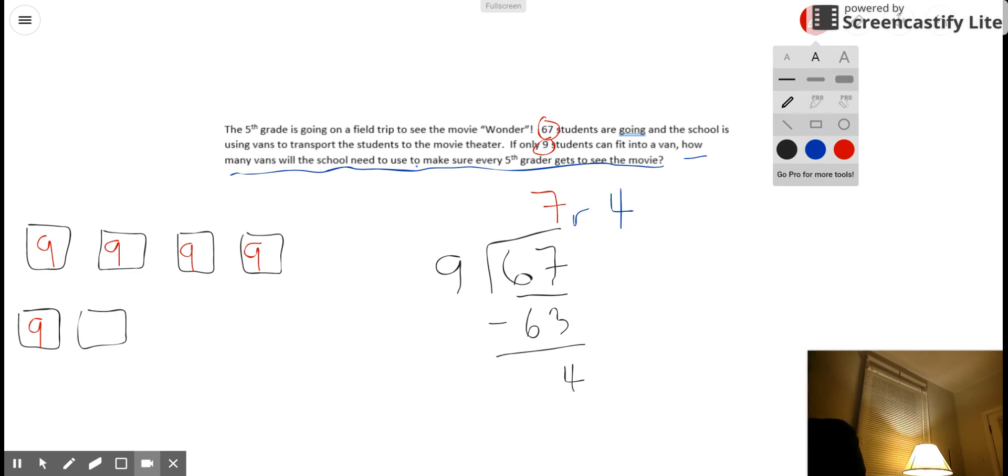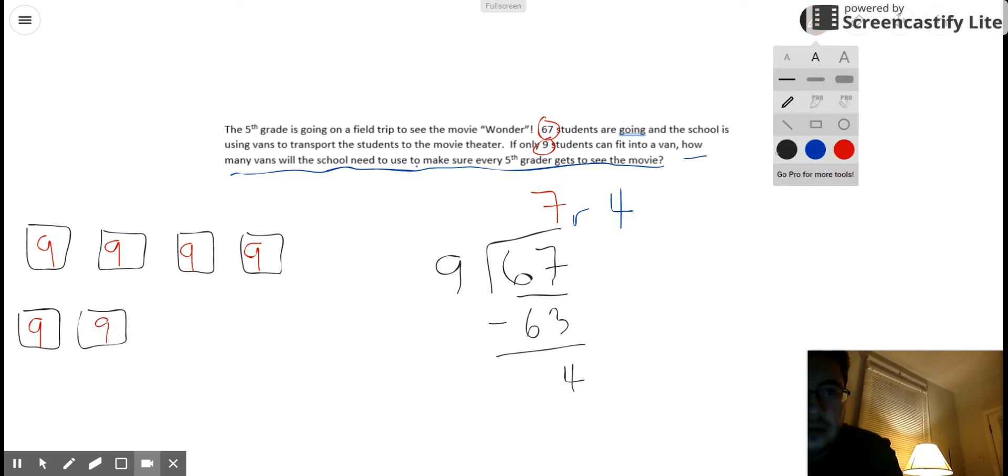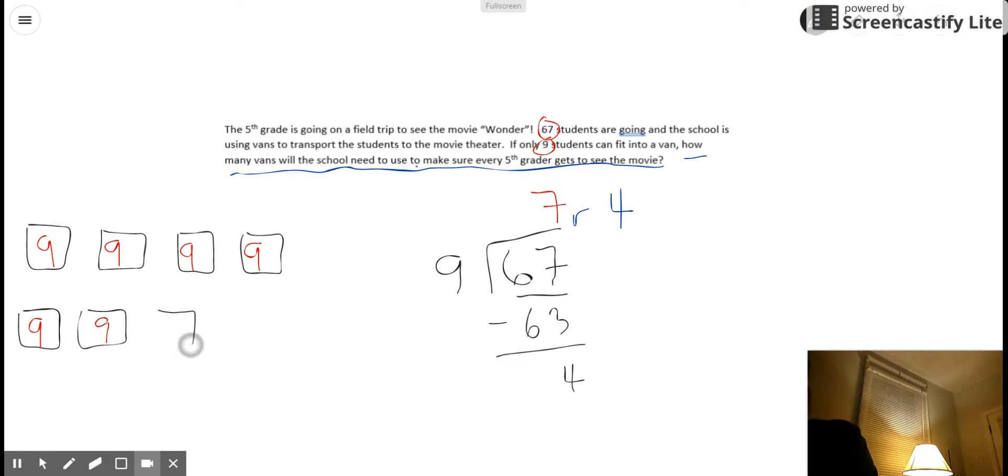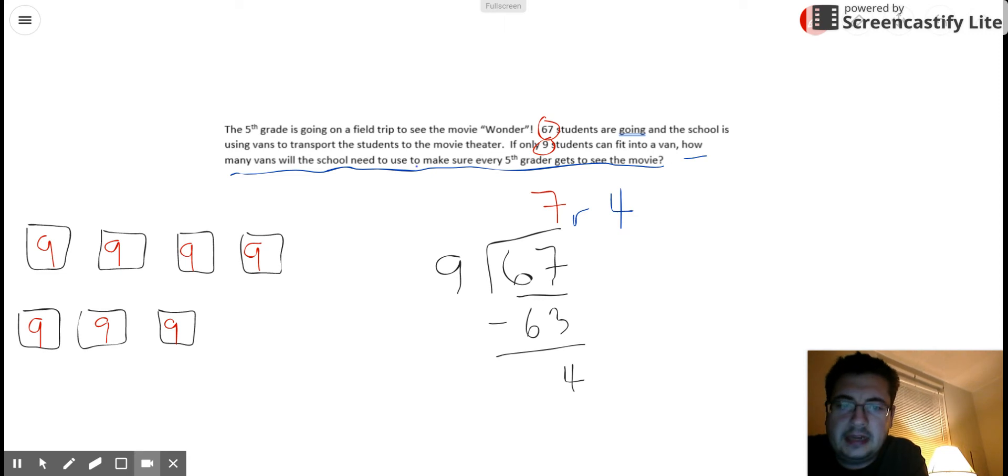Now I have my 6th van. And now I have my 7th van. So 7 vans, 9 students in each van. That only accounts for, or that only includes 63 students. But wait a second. There are 67 students who want to go to the movie theater. So I'm at an interesting crossroads here.